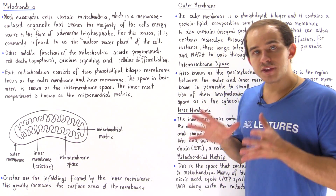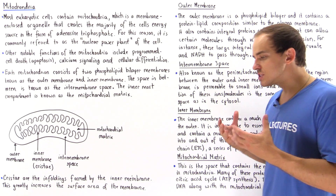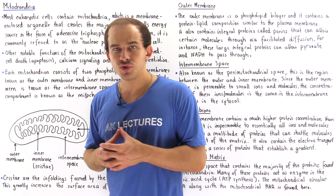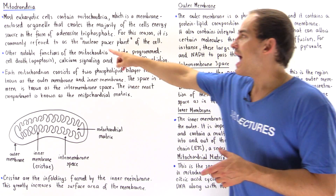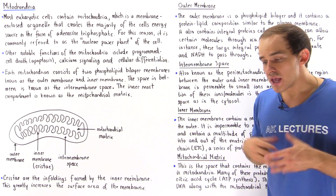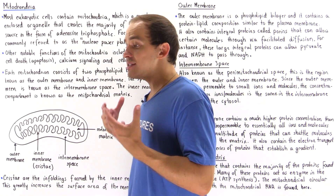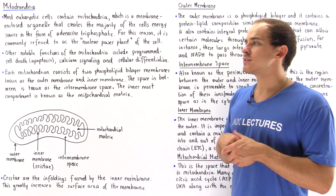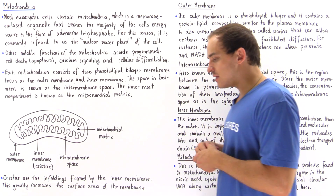Because the mitochondria produces the majority of the energy that the cell uses, we commonly refer to the mitochondria as the nuclear power plant of our cell. It produces the energy that powers the different types of processes that take place within our eukaryotic cells.